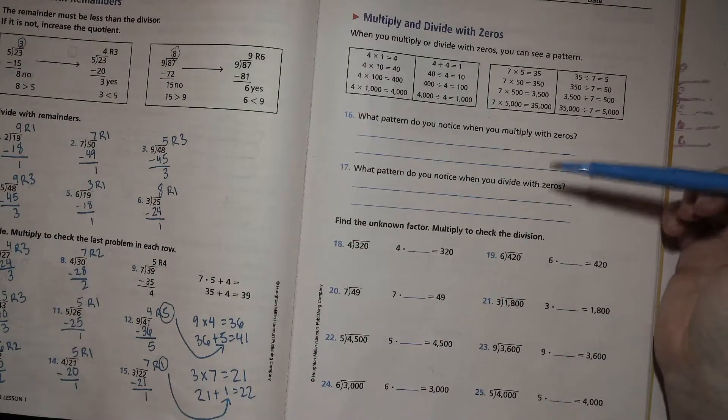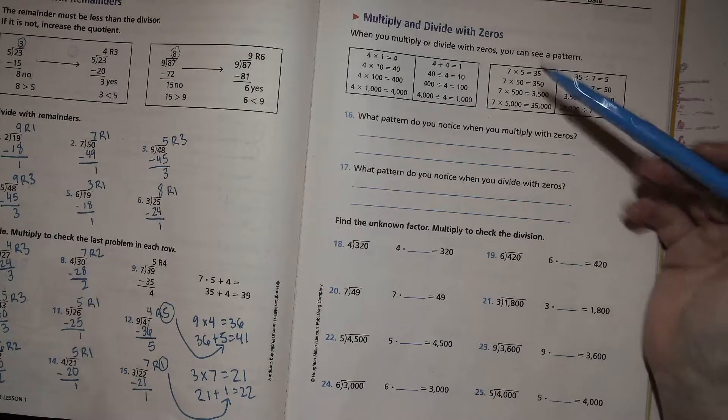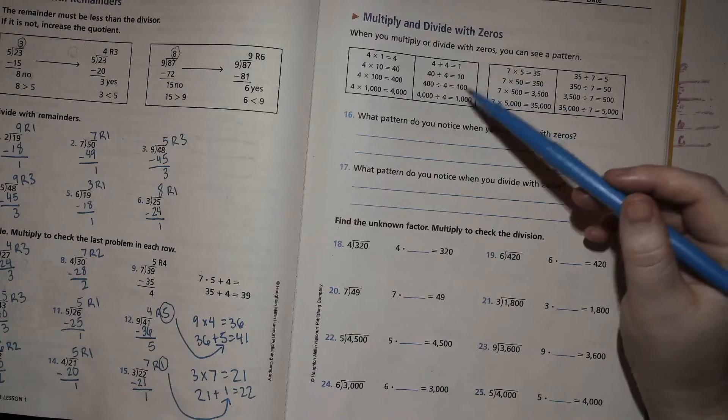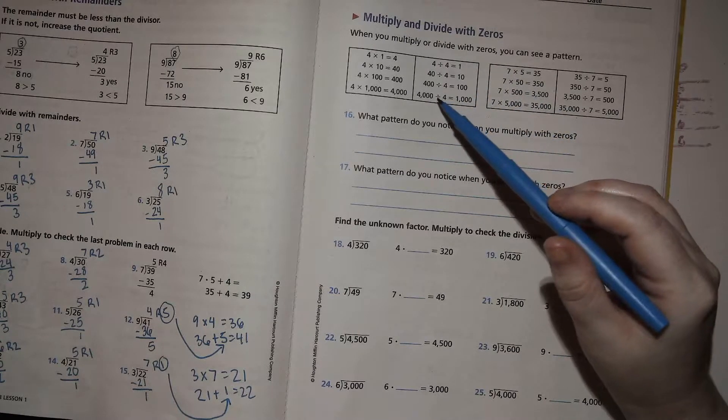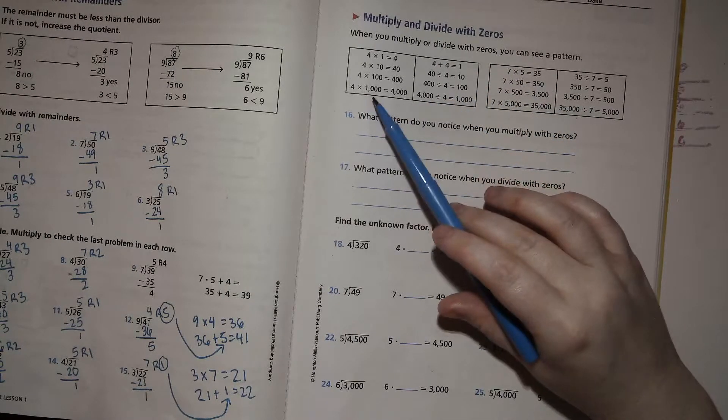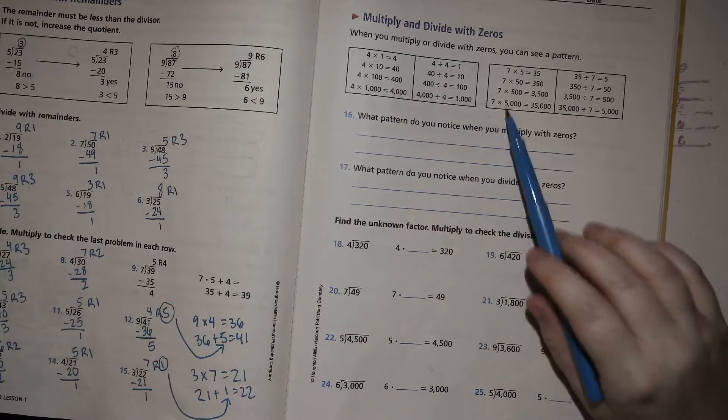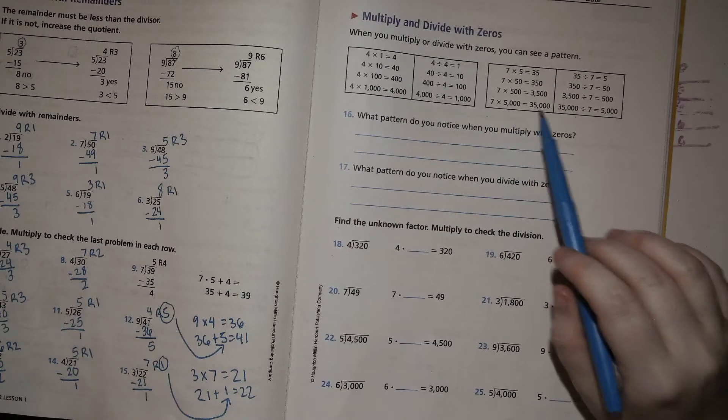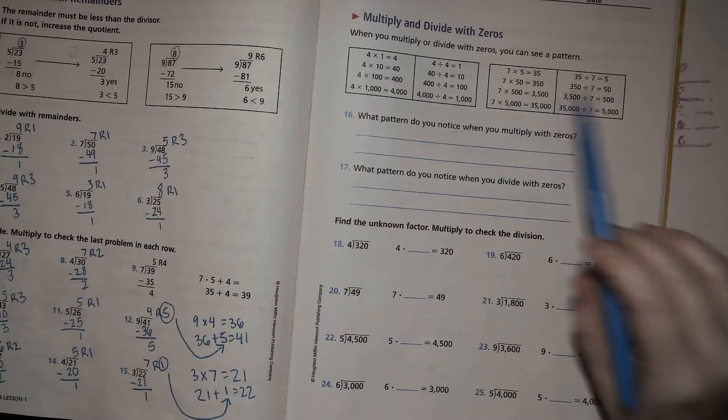If you multiply like four times 1,000, you get 4,000. If you multiply 7 times 5,000, you get 35,000. 7 times 500 is 3,500.